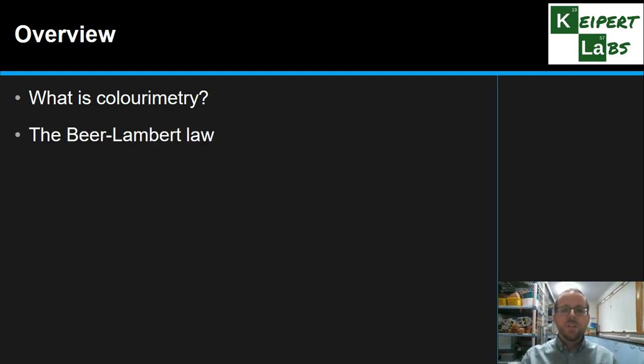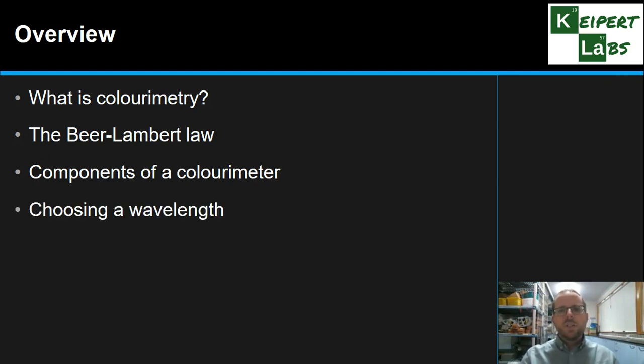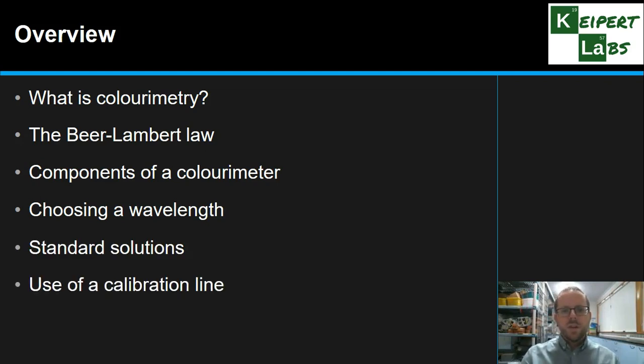We're going to look at the fundamental principle behind it called the Beer-Lambert Law. We're going to look at the different components of a colorimeter, so how does the actual piece of equipment work. We're going to look at the concept of how we choose a wavelength to use in colorimetry. We're going to look at the preparation and use of standard solutions, and the development of a calibration line to help as part of this technique.